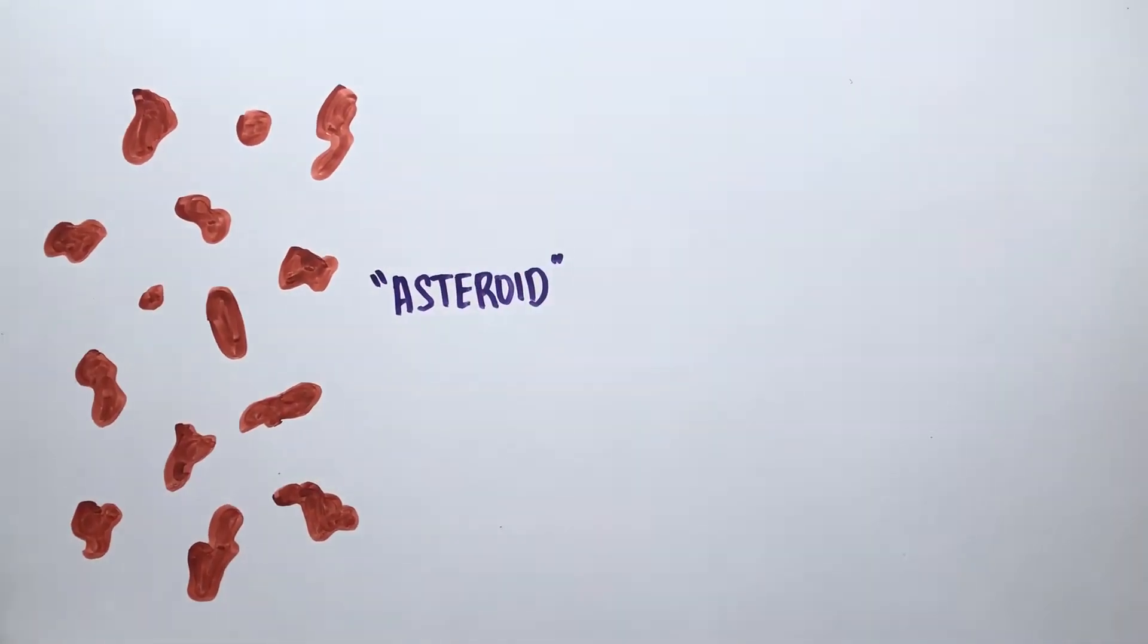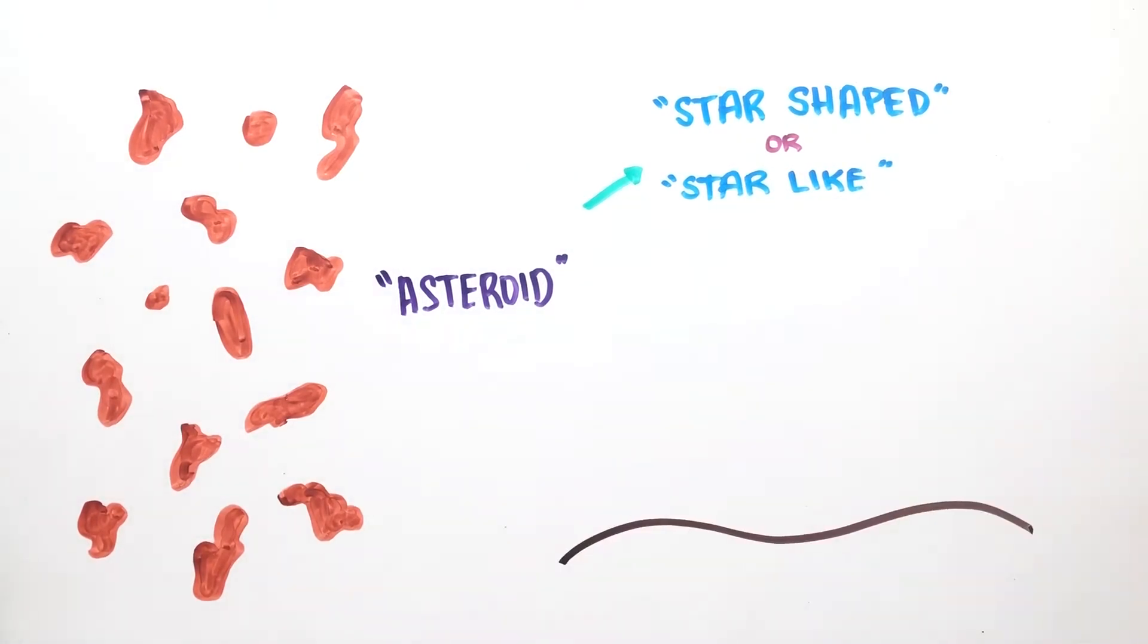The word asteroid means star-shaped or star-like. That's because during its first discovery, asteroids resembled distant stars when viewed through a telescope.